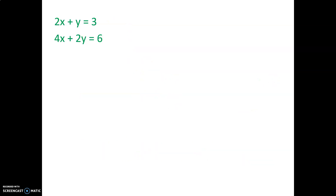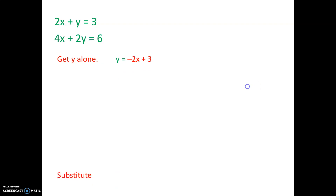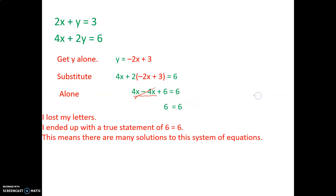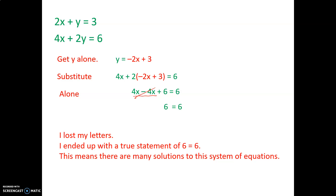Here's the last example. Getting y alone in the first equation again gives y equals negative 2x plus 3. Substituting into the other equation: 4x plus 2 times negative 2x plus 3 equals 6. Distributing gives 4x minus 4x plus 6 equals 6. The x terms drop out, leaving 6 equals 6 — a true statement. This means there are many solutions to this system of equations.